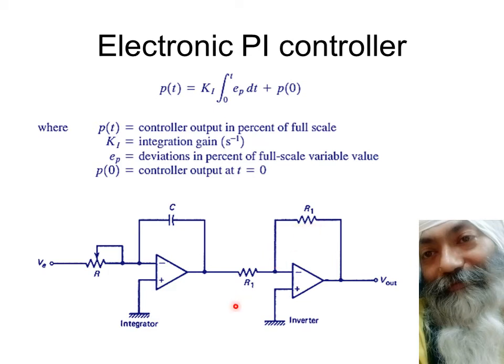This inverter is given by equal resistance in the feedback as in the input circuit so that you don't have any gain associated with it. This RC forms the time constant and this RC forms the basis of KI. It will be there in the next equation.